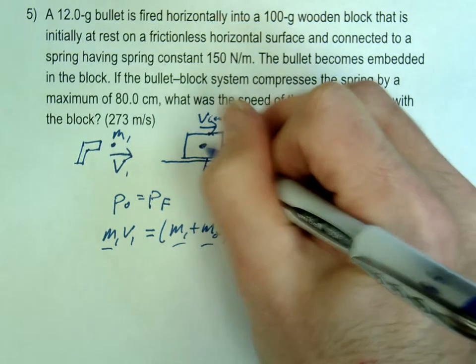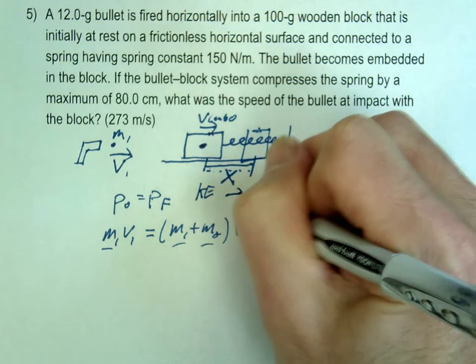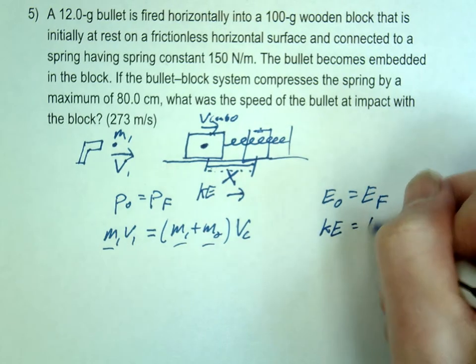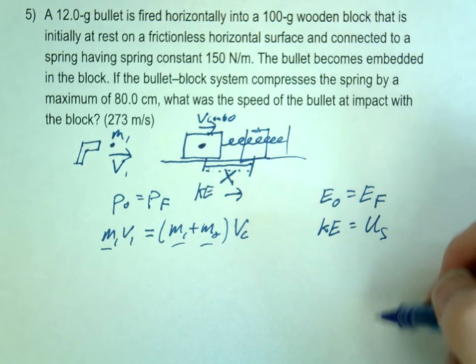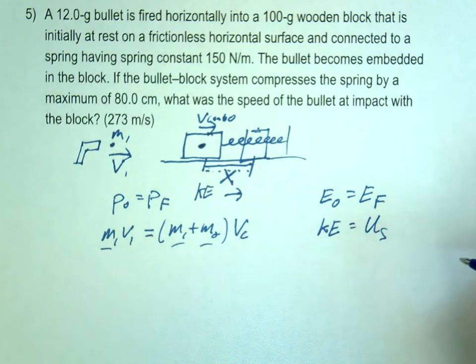So we're going to say this has some kinetic energy right here. And then it's going to compress the spring. What's it turning into? Spring potential. OK, so we're developing our second equation here because we have two unknowns. We want to get our two equations.